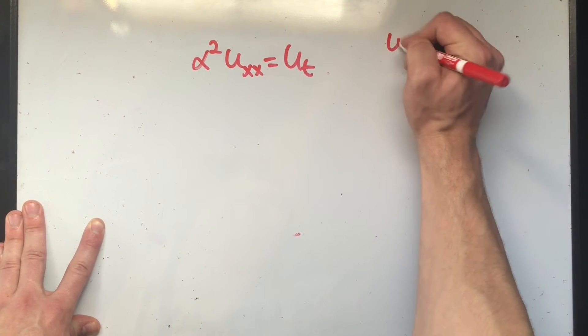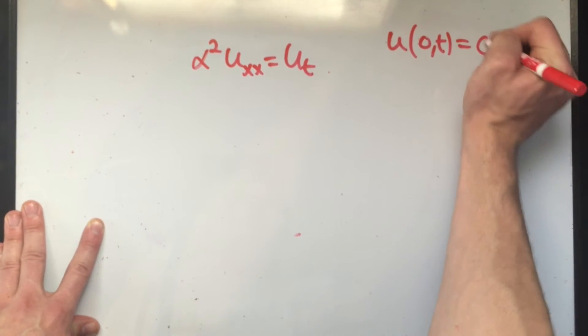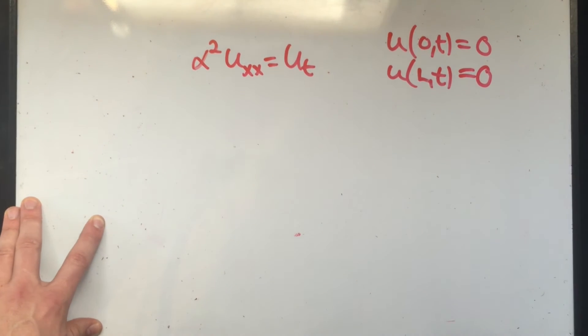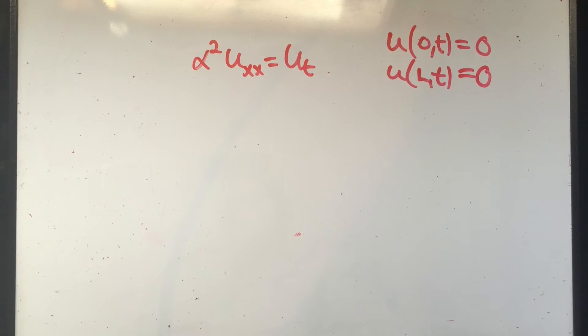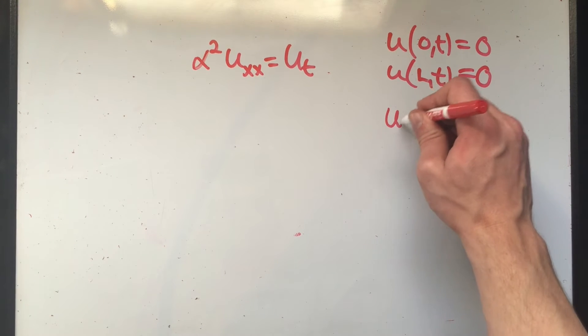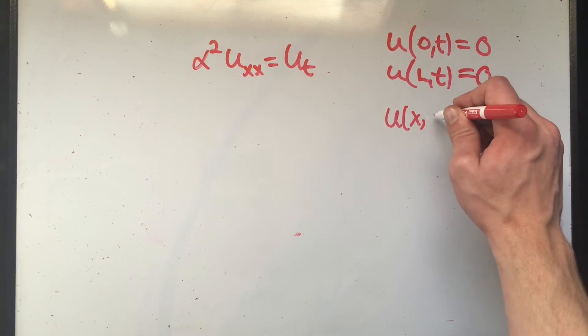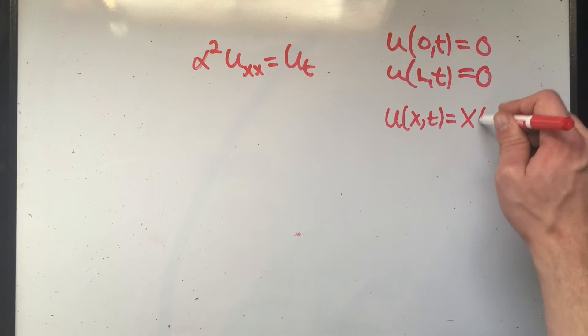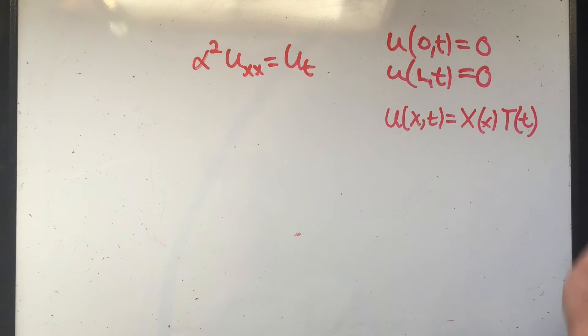So I know alpha squared uxx equals ut. And my initial conditions were u of zero T equals zero, and u of L T equals zero. I have one more assumption I have to make. I'm going to assume that my u of X and T is a product of two functions. And one of those functions is only going to be in terms of X. And the other function I'm calling T is only going to be in terms of Y.